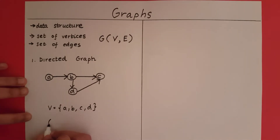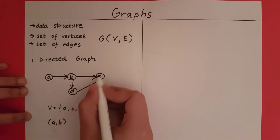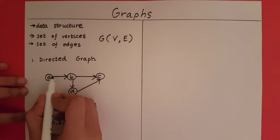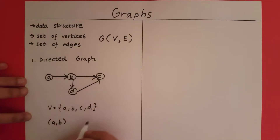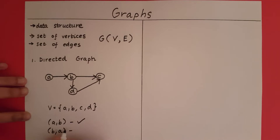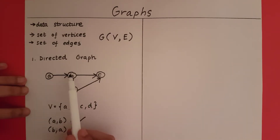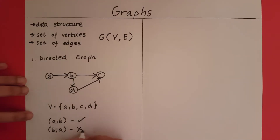So if I ask, does the edge that connects A to B exist in this graph? Yes, there is an edge between A and B and that edge moves from A to B. So yes, this edge exists in this graph. Suppose I ask, does the edge B, A exist in this graph? There does not exist an edge which goes from B to A. So no, this edge does not exist.